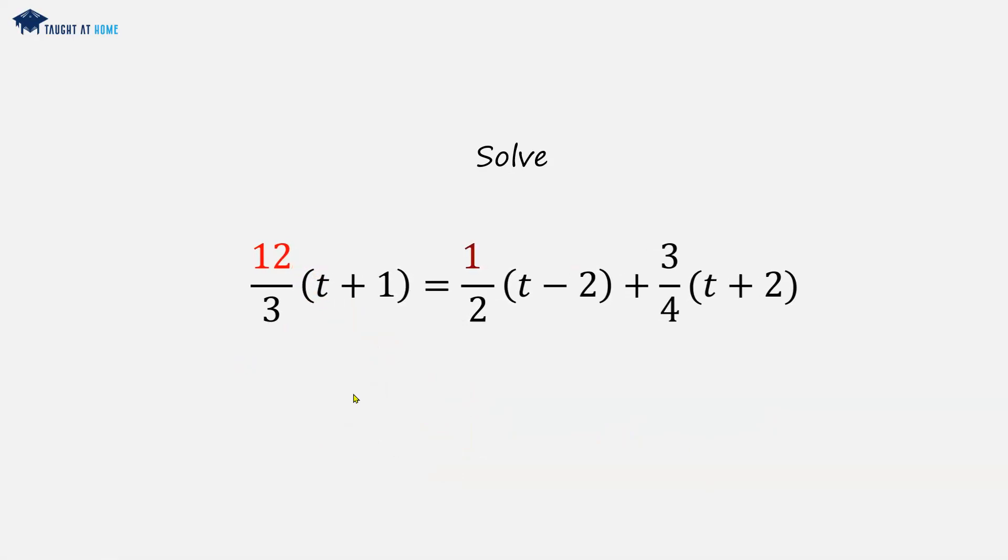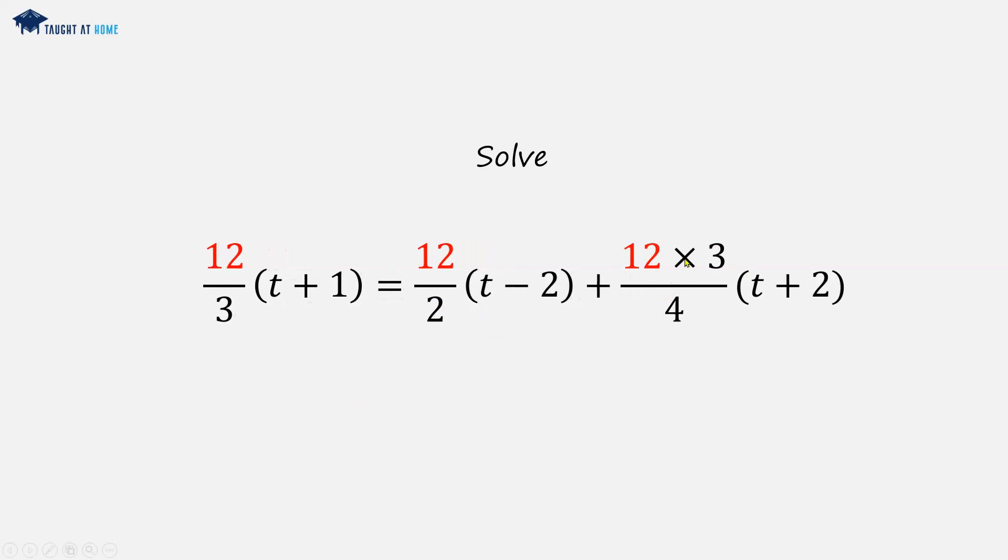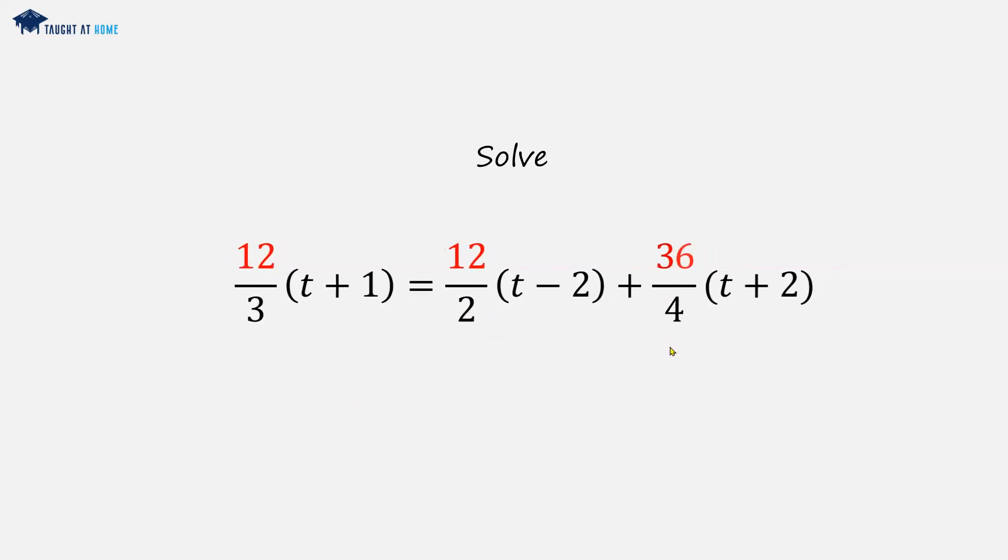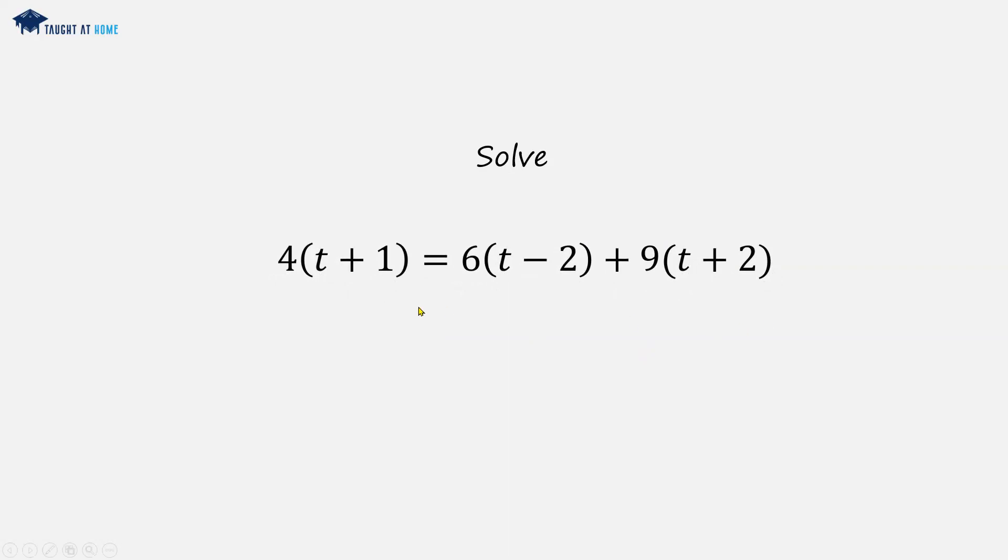We'll multiply the first term, the second term, and the third term. Now we can simplify each one and remove the fractions: 12 over 3 is 4, 12 over 2 is 6, and 36 over 4 is 9. We can then multiply throughout.